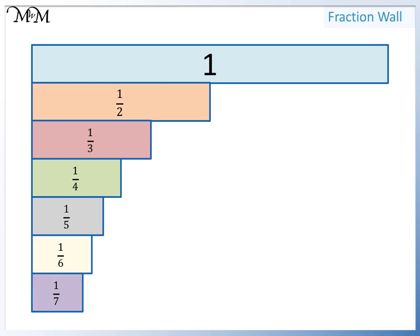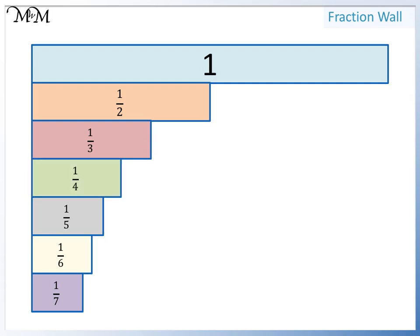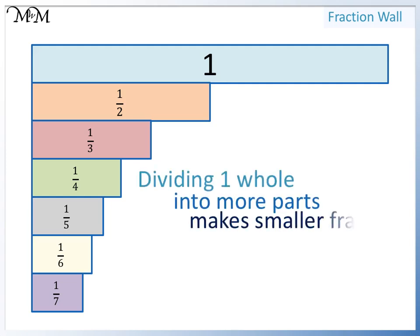Looking at the size of these fractions: one half is bigger than one third, which is bigger than one quarter, which is bigger than one fifth, which is bigger than one sixth, which is bigger than one seventh, and so on. We can see that the more parts we have divided into, the smaller the fraction. Dividing one whole into more parts makes smaller fractions.